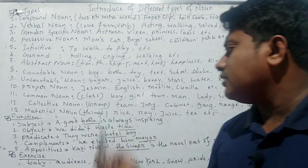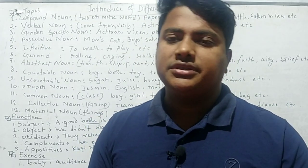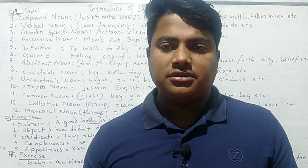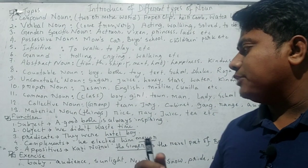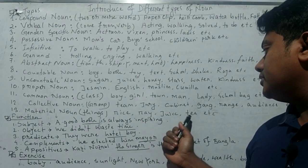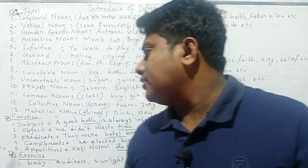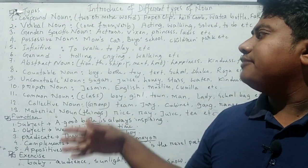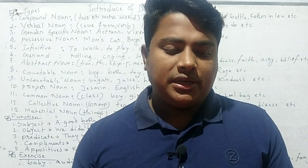Then there are material nouns. Material nouns express things that cannot be counted individually but can be measured — liquid things such as rice, juice, tea, etc. These are not countable, so they are material nouns. So we have now been introduced to all 13 types of noun, which are very useful topics for every student.